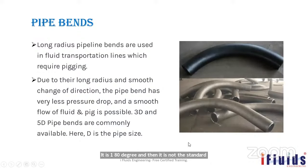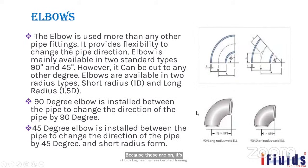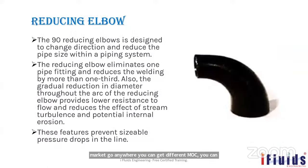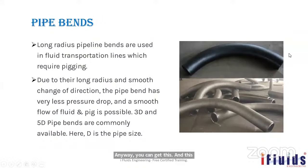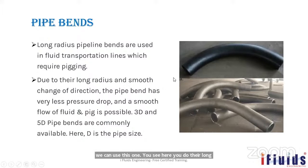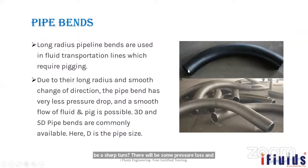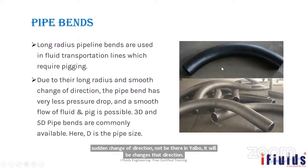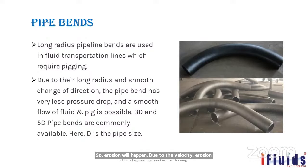Standard elbows are forged and readily available in market in different materials — carbon steel, stainless steel, or PVC. Pipe bends have a long radius for smooth direction change and therefore have less pressure drop compared to standard elbows, where the sharp 90-degree turn causes pressure loss and erosion. Due to velocity changes at the bend, elbows are prone to wall erosion and leakage over time.